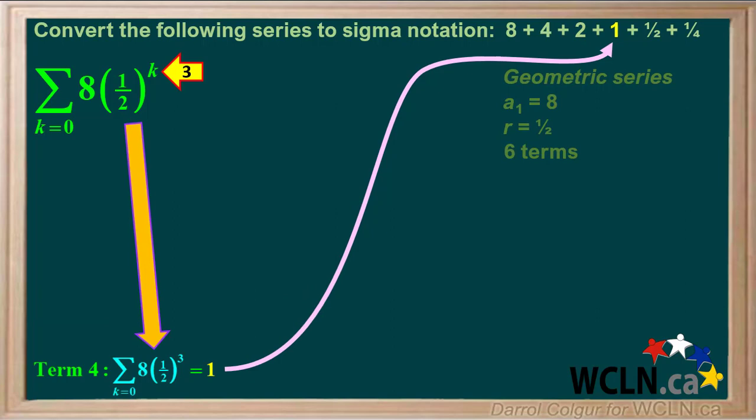For term 4, we'll put in 3 for k, so we would get 8 times 1 half cubed, which is equal to 8 times 1 eighth, or 1.